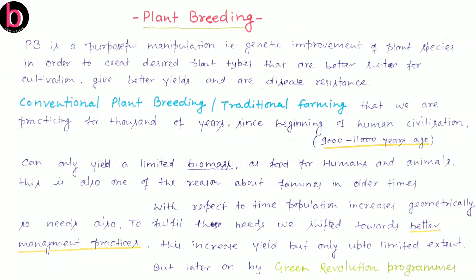As we already know, animals are also a good source of food. For example, animals produce eggs, milk, and meat, and there is also a huge amount of human beings feeding on seafood. The second half of the chapter is about plant breeding, single cell protein, and tissue culture programs — that is about plants and how by using plants we can improve productivity.